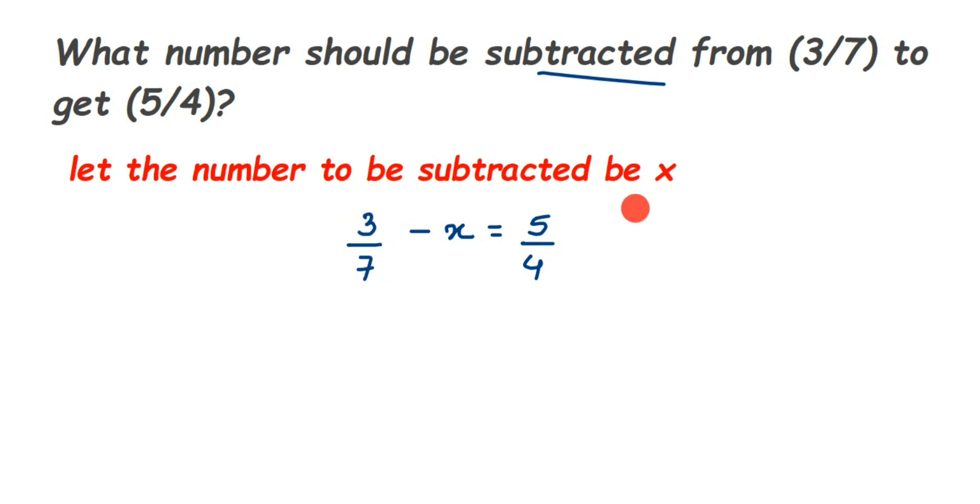Here I'm going to transpose this minus x to the other side and bring 5/4 to the left side. Why I'm doing this? I don't want this x to be negative. In the last step we can remove the negative sign, but I just want to avoid it in the initial stage.